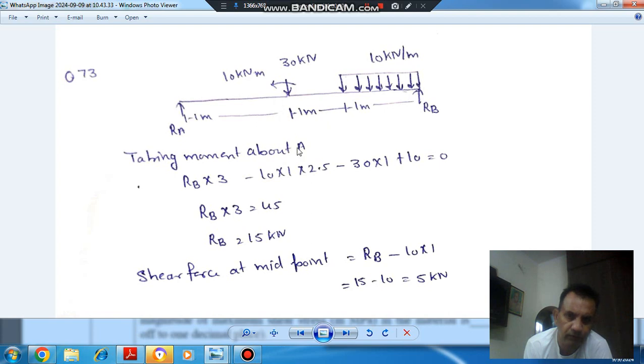Clockwise positive: 10 into 1 into 2.5 negative, 30 into 1 negative, and 10 positive. So from this RB comes out as 15 kN.